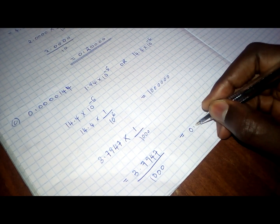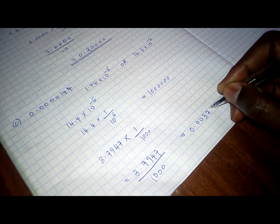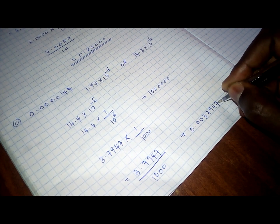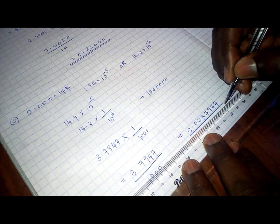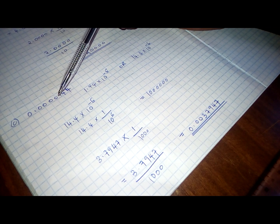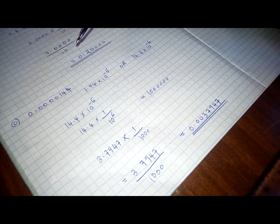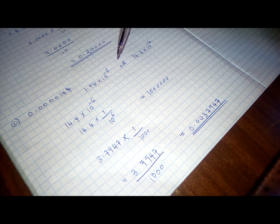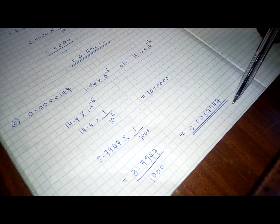Which will give us 0.0037947. This becomes our answer. So, this is the square root of this particular number. If the question asks you to leave your answer in a certain decimal place, you have to consider that. Maybe you can also be asked to leave your answer in some specific significant figures. You need also to consider that. However, if the question is open, you just leave your answer in that form.